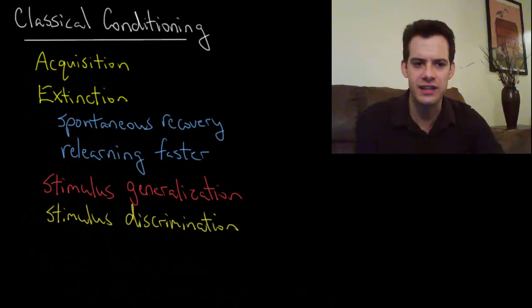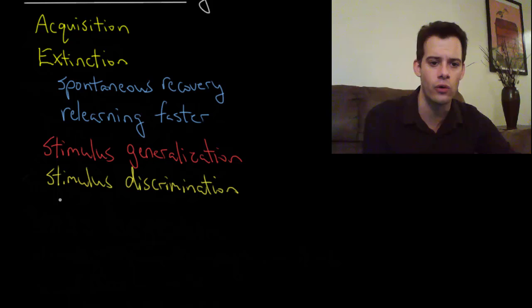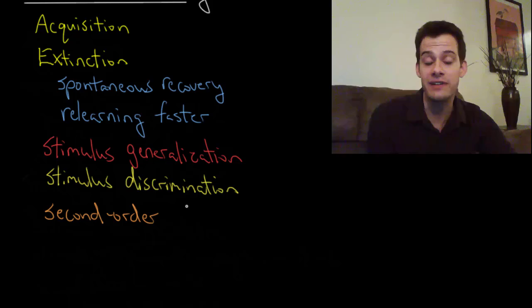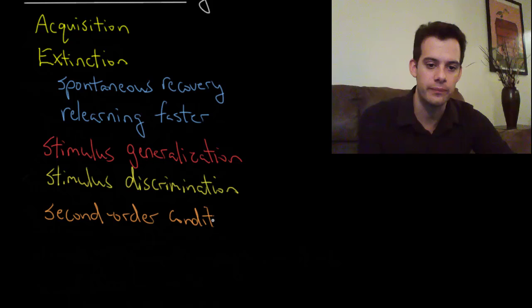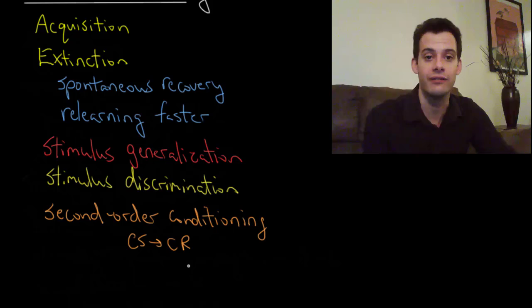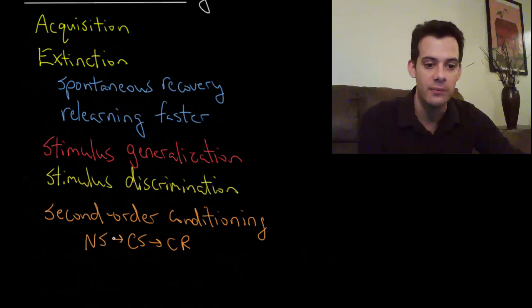A last thing that Pavlov was able to demonstrate was what's called second order conditioning, or higher order conditioning. This means that he would introduce a new neutral stimulus in addition to a previously conditioned stimulus. In second order conditioning, we already have some conditioned stimulus that causes a conditioned response — we ring a bell and the dog salivates. Now we go to a second layer of learning, and we're going to introduce a new neutral stimulus before the conditioned stimulus.